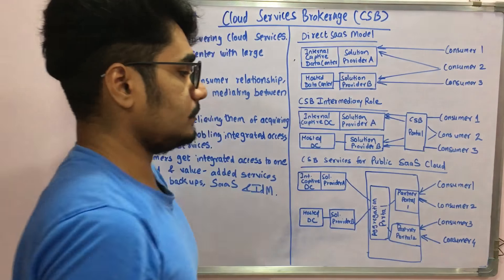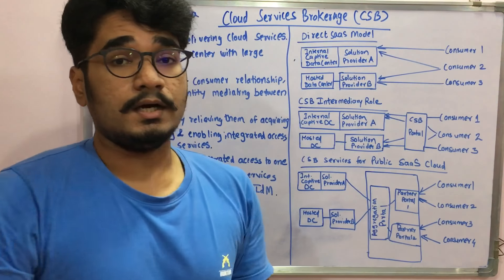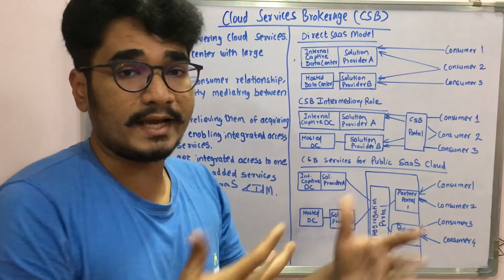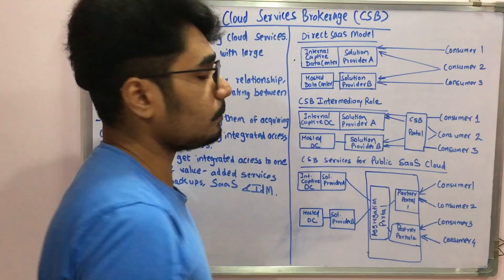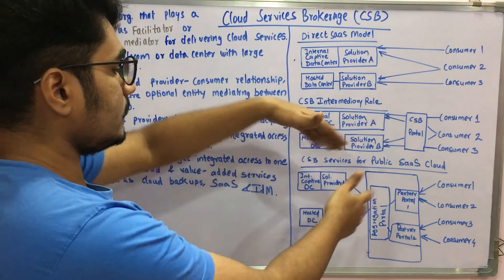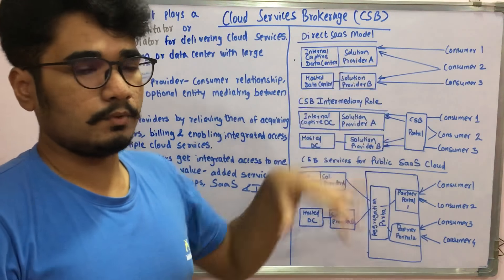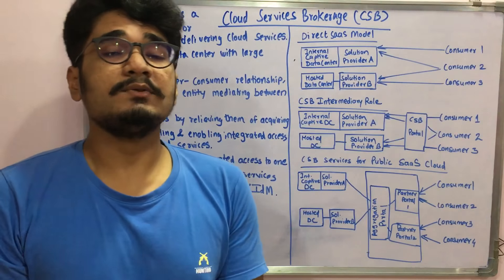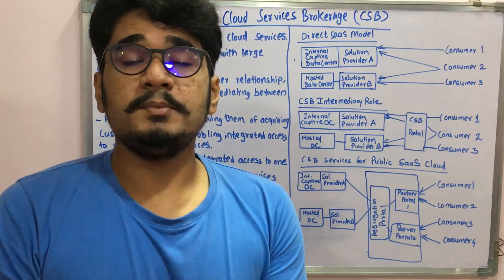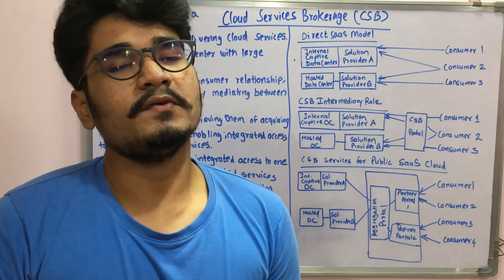The third model is CSB services for a public SaaS cloud. The same structure applies, but the CSB portal is replaced by an aggregation portal, which then splits into Partner Portal 1 and Partner Portal 2. This is done to load balance activity — as the number of consumers increases, the aggregation portal scales by splitting tasks across the two partner portals.